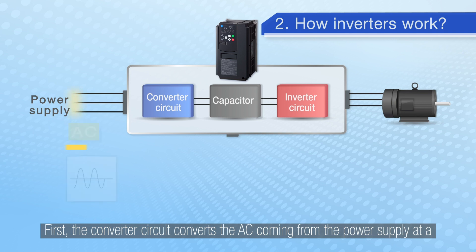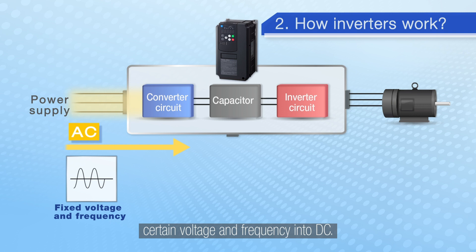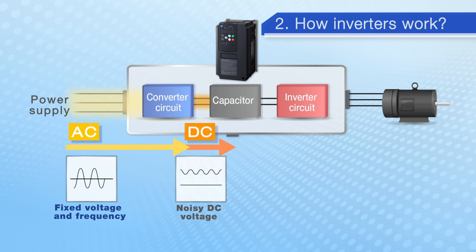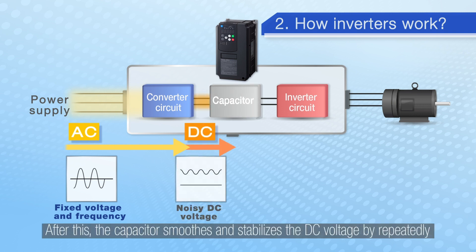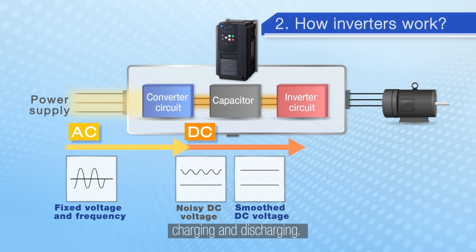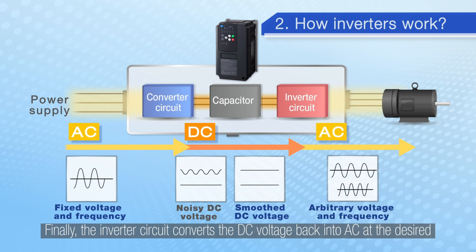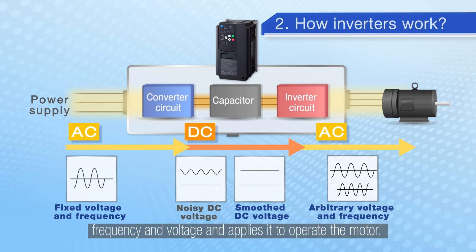First, the converter circuit converts the AC coming from the power supply at a certain voltage and frequency into DC. After this, the capacitor smooths and stabilises the DC voltage by repeatedly charging and discharging. Finally, the inverter circuit converts the DC voltage back into AC at the desired frequency and voltage and applies it to operate the motor.